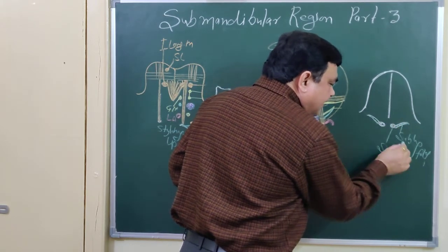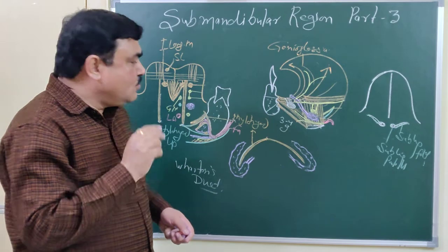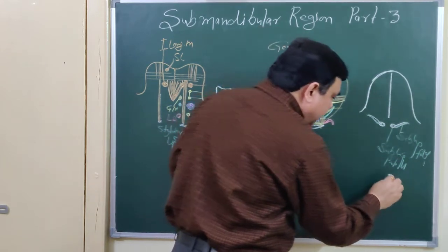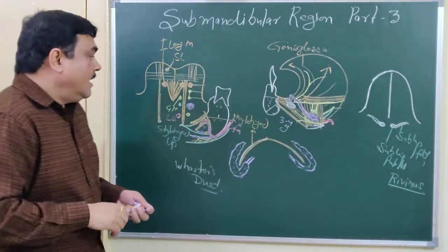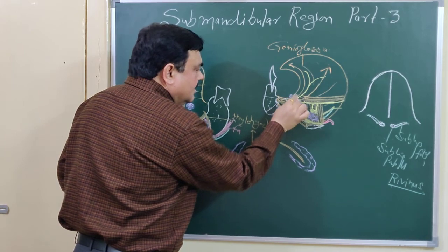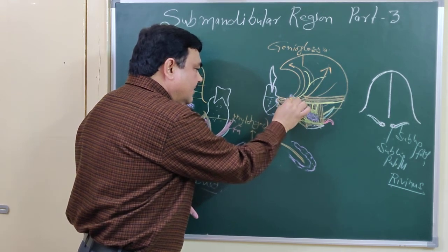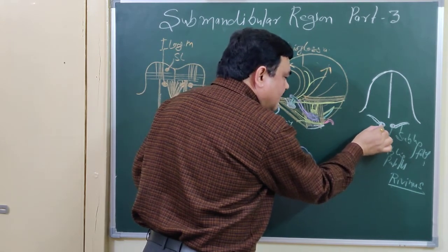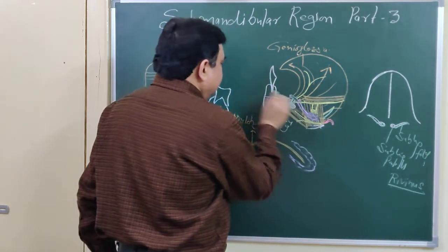On the summit of the sublingual papilla, the submandibular duct — Wharton's duct — opens. About seven to eight ducts of the sublingual salivary gland also open here. The sublingual salivary gland is mucous-secreting. These ducts opening into the floor of the mouth are known as the ducts of Rivinus.